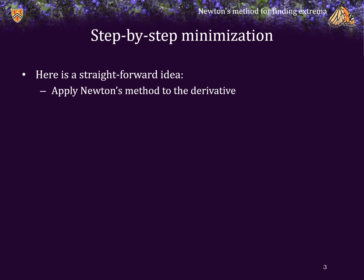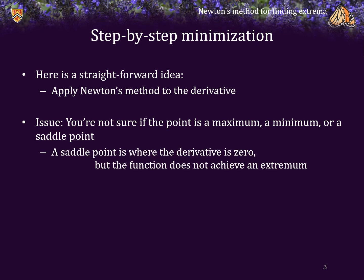Here's a reasonably straightforward idea: to find an extrema, simply apply Newton's method to the derivative. The issue with this is that you're not really sure if the point you converge to is a maximum, a minimum, or a saddle point. A saddle point is any point where the derivative is zero but where the function does not achieve a local extremum.